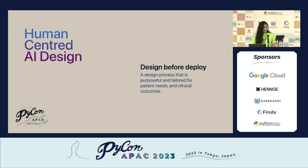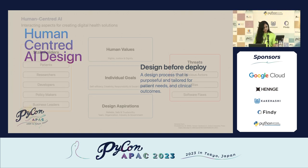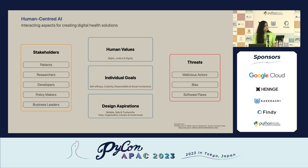This is why integration of design is very important when we talk about human-centered AI. It is essential to design a solution before its deployment, which can allow a tailored approach to patient needs and clinical outcomes. There are many interacting aspects for creating a digital health solution, like different stakeholders — patients, researchers, and developers. They should think about human values, individual goals, and their design aspirations, while also considering threats like bias and software flaws.